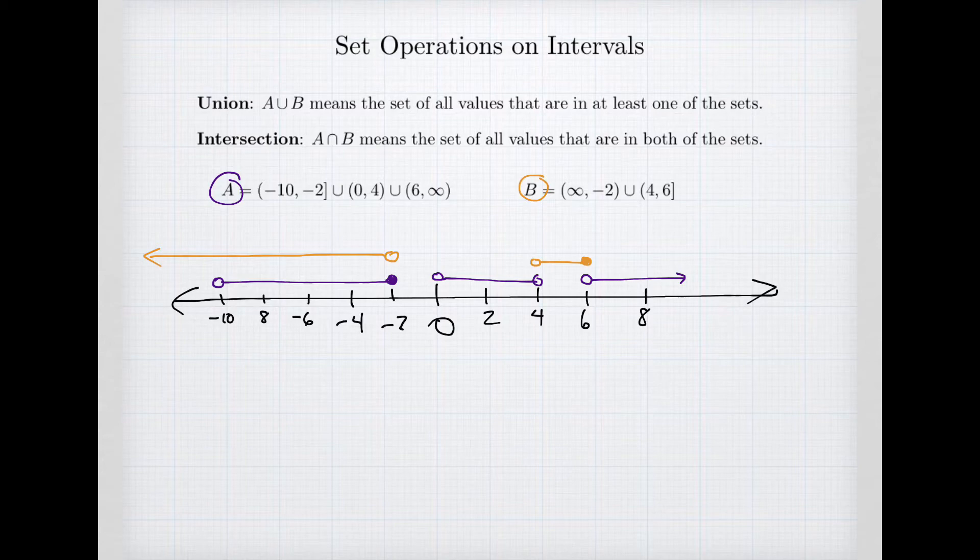All right, so let's now think about what our sets mean. A union B is a set of all values that are in either A or B, at least one. So let's choose another color. Let's start drawing on the number line those values. So I think I will use pink. We'll color it right on the number line.